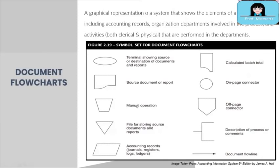Shown on the screen are the symbols commonly used in a document flowchart — familiarize yourself with these symbols. For example, the inverted triangle means storage, the inverted pentagon represents a page connector, and the circle represents an on-page connector. To reiterate, document flowcharts are used for manual systems.